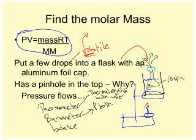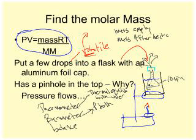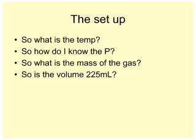You remove the flask from the water, dry the outside, and let it cool to room temperature. Some gas particles will condense. Take the mass of the empty flask and then the mass after heating and drying. Extra liquid evaporates, shooting out the pinhole until pressure equalizes. On cooling, higher outside pressure pushes gas back in and some particles recondense.